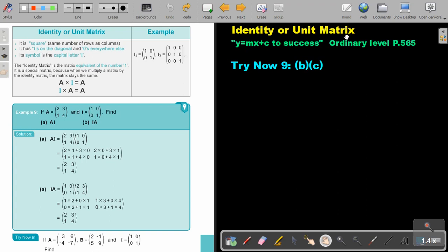Identity or Unit Matrix. You will find this on page 565 in the Namibia Ordinary Level Mathematics textbook, Y equals MX plus C to success.